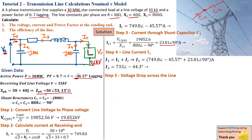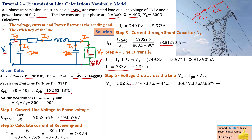Step 5: find the voltage drop across the transmission line. We multiply the line current by the impedance per phase. In a star-connected system, the per-phase current equals the line current, so Vz equals I_phase times Z_phase: 50 at 53.13 degrees times 733 at negative 44.3 degrees. That gives a voltage drop of approximately 36.6 kilovolts at an angle of 8.86 degrees.